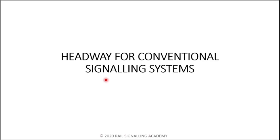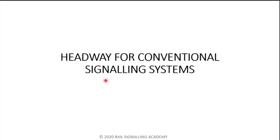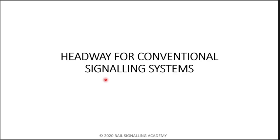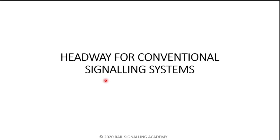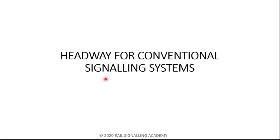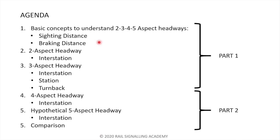Hello everyone, welcome back to Rail Signaling Academy. In the last video we covered a very high-level understanding of headway, but in this video we'll go more into the details and apply those concepts on conventional signaling systems. We'll be understanding the intricacies of two, three, and four aspect signaling systems. I thought it'd be a good idea to add an agenda slide to map out everything we'll be discussing.